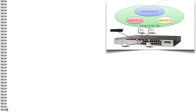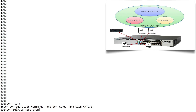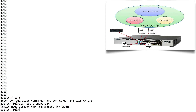Before we get going with our Private VLAN configuration, there's an important prerequisite: VTP either needs to be turned off or it needs to be in Transparent Mode. To confirm that, in Global Configuration Mode we say: vtp mode transparent. It looks like we were already in Transparent Mode, but if we were not, that command would have put us there.